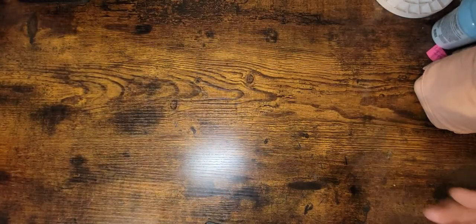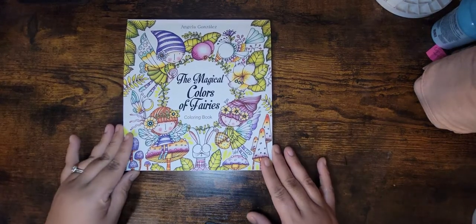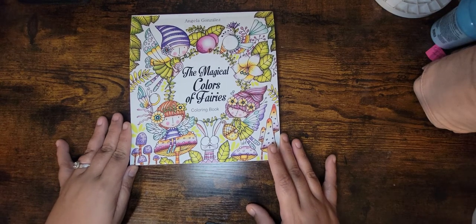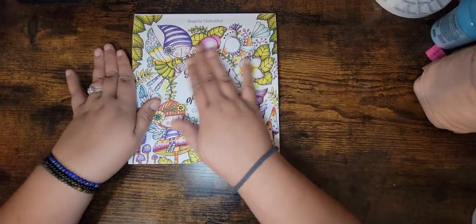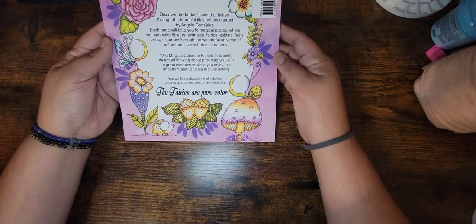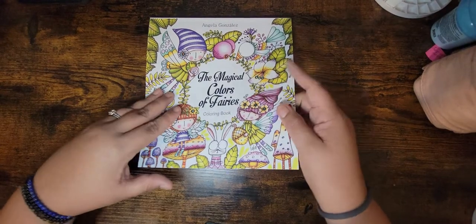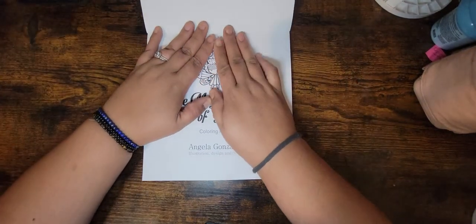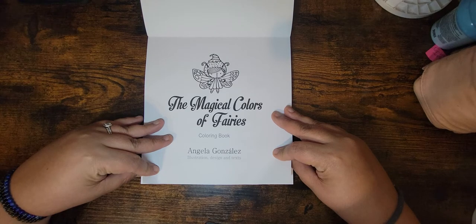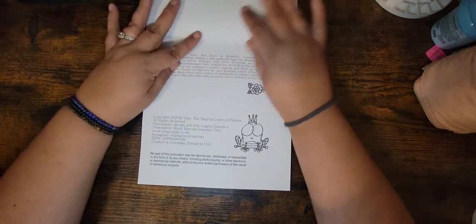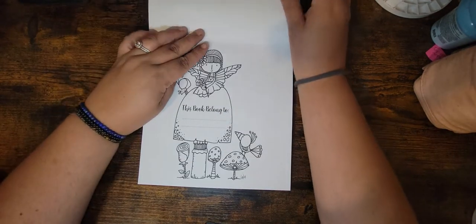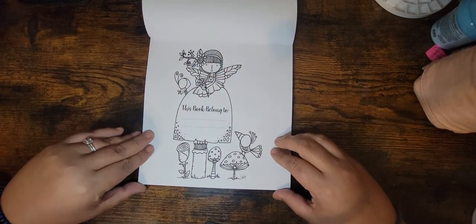And again, that's Colors for Life coloring book by Angela Gonzalez, and I got another book from her. It's a little bit smaller, and this one is The Magical Colors of Fairies by Angela Gonzalez. Again, another matte cover. This is the front, this is the back. Super cute book. And this is one-sided as well. The Magical Colors of Fairies coloring book by Angela Gonzalez. This one is from 2020. This is the nameplate page.